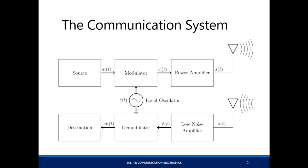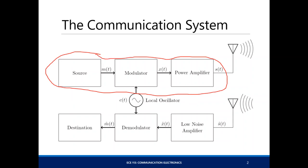This is your communication system. You have a message source that will be modulated and then amplified so that the signal will be received by the receiver. We want to make sure that the signal has enough power. This is your transmitter part. At the other side, you will receive a signal, which is very weak normally if it's wireless transmission.